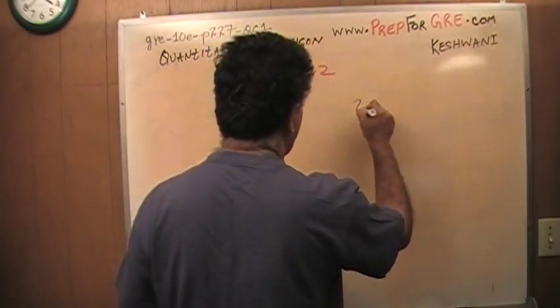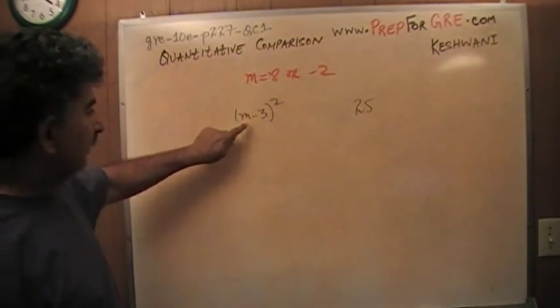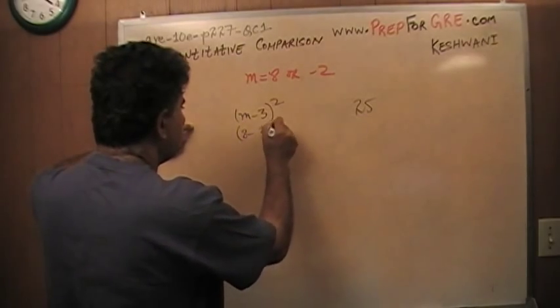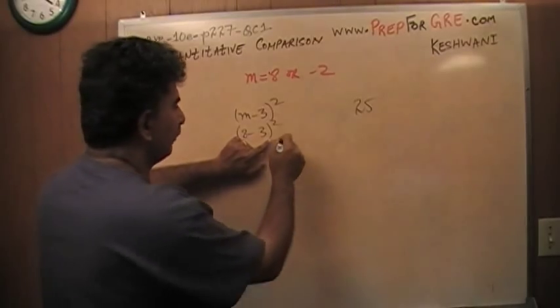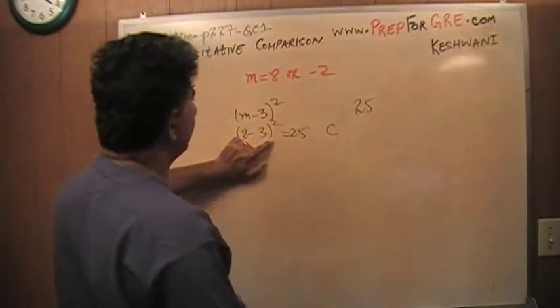Well, if m happens to be 8, then 8 minus 3 would be 5, and 5 squared is 25. This is also 25, so the answer would be C.